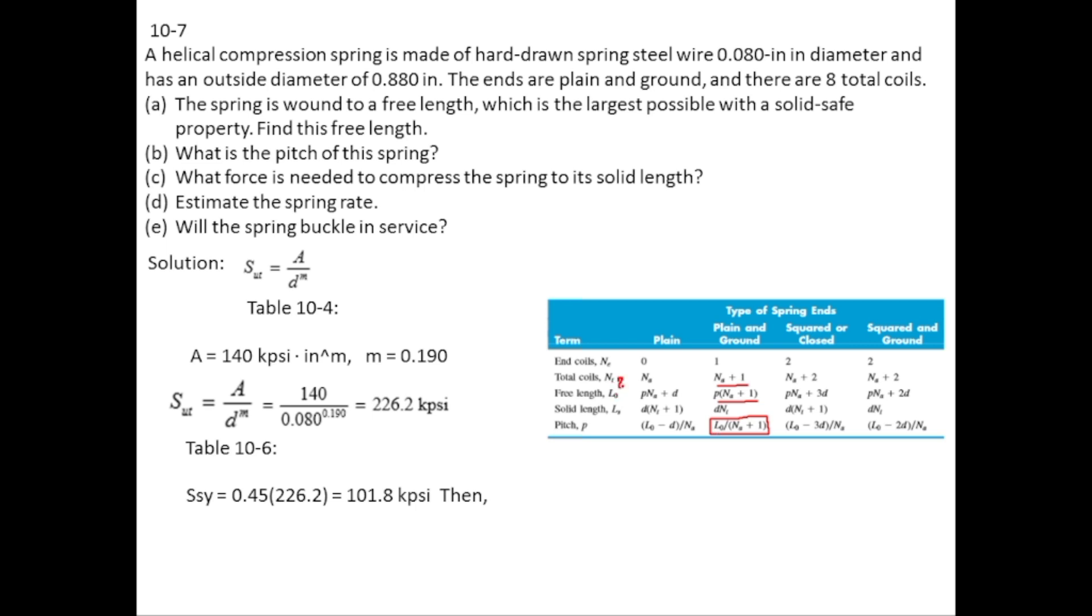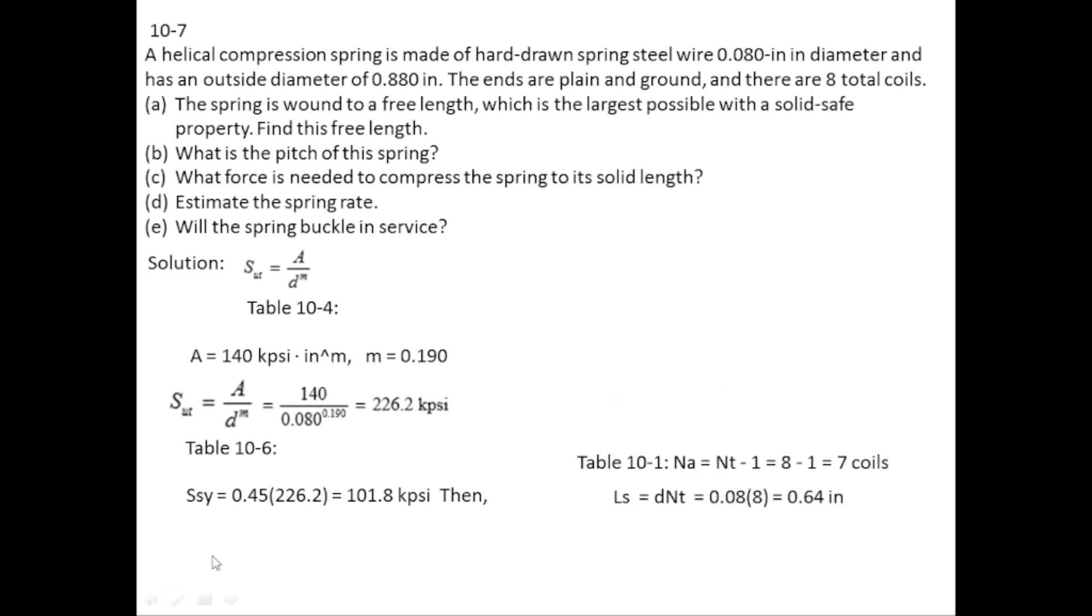From the table NT is equal to NA plus 1. Rearranging for NA gives you NT minus 1, and NT is 8 so NA is equal to 7. Similarly LS is equal to D times NT. D is 0.08 and NT is 8 so LS is equal to 0.64 inches.